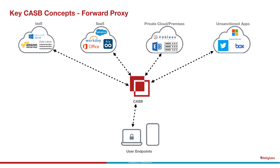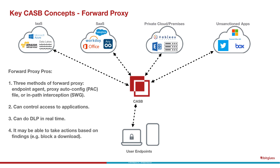The second solution is the forward proxy. Now the endpoints are getting involved — they connect directly to the CASB, which is in the path, and then the CASB connects to the cloud application. We've moved into a more real-time world. We can now control access to applications, do data loss protection in real time, and take actions like blocking the download of a file that shouldn't be downloaded to a device. There are three methods for forward proxy: an endpoint agent, a proxy auto-config (PAC) file pushed to the endpoint, or an in-path interception through a secure web gateway appliance where traffic is routed through that appliance.